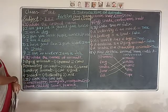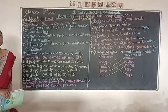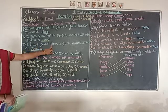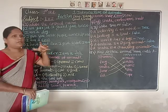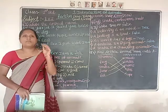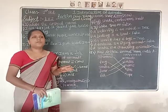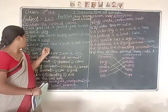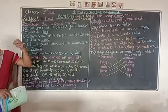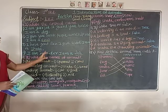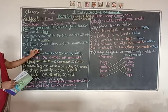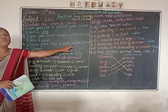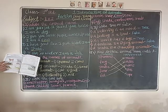Next one: 'I have woolly fur, I give wool, I am a sheep.' What does a sheep give us? Sheep gives us wool. Sheep are mostly white in color, though some may be brown. Their fur is soft like cotton, so the answer is sheep.